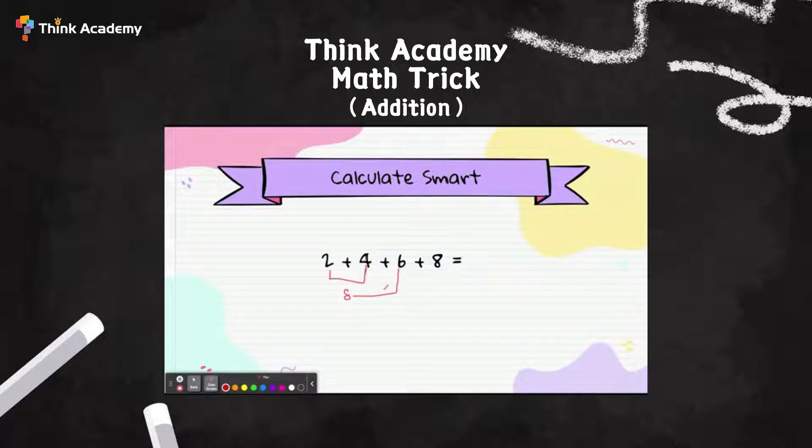It seems like I have a lot to calculate, right? So today let me teach you a new trick called 'calculate smart.' How we calculate smart is by finding a round number from 10, which is very easy to calculate.